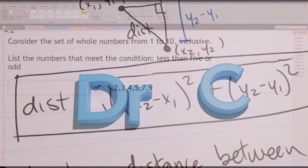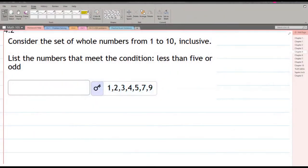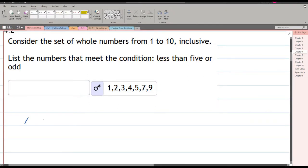This question, we're going to consider the set of whole numbers from 1 to 10 inclusive. Let's go ahead and write those out. Now we want to list the numbers that meet the condition: less than 5 or odd.